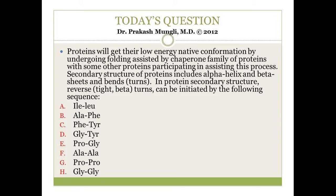What happens in the protein folding process? During this process, proteins will attain their secondary structure, and then that secondary structure refolds into tertiary structure. If the protein has more than one subunit, the tertiary structure is further folded into quaternary structure, basically because of the interaction between the side chains.